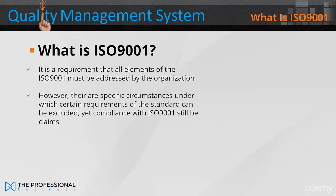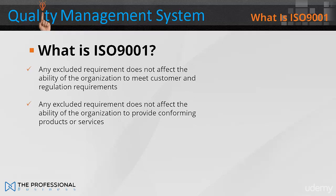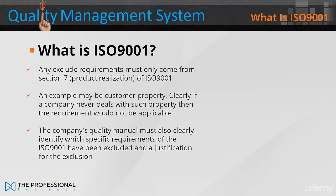It's a requirement that all elements of the ISO 9001 must be addressed by the organisation. However, there are specific circumstances under which certain requirements of the standard can be excluded, yet compliance with the ISO 9001 can still be claimed. Any excluded requirement must not affect the ability of an organisation to meet customer and regulatory requirements, nor the ability to provide conforming product or service. Any excluded requirement must come from section 7, the product realisation of the ISO 9001. An example might be customer property — if a company never deals with such property, then this requirement would not be applicable. The company's quality manual must also clearly identify which specific requirements of the ISO 9001 have been excluded and the justification for exclusion.